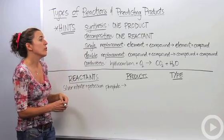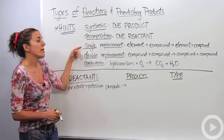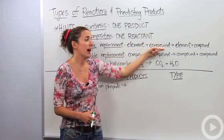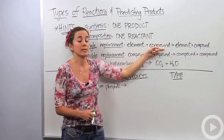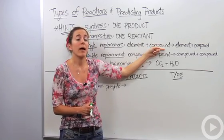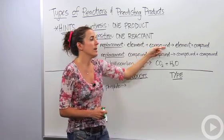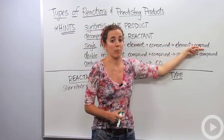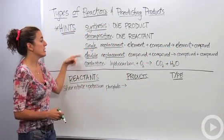Next type of reaction is single replacement reaction, and the way you'll recognize that is if you have an element and a compound. Typically the compound, not typically, always the compound will be an ionic compound, is going to produce another element and another compound. So that's a single replacement reaction.